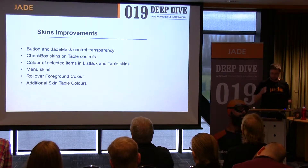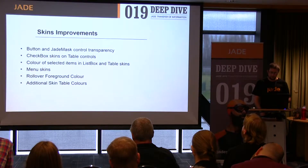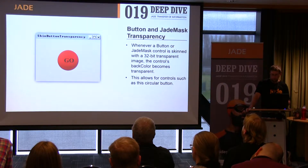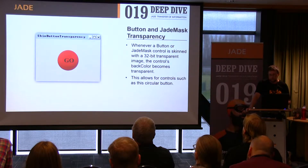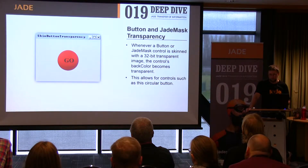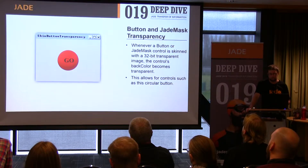We've added a collection of improvements for skins such as button and jade mask control transparency, checkbox skins and table controls, color of selected items in list boxes and table skins, some menu skins, rollover foreground colors, and additional skin table colors. The handling of button and jade mask skins has been upgraded so that when either control is skinned and at least one of the skinned images is 32-bit, meaning the alpha channel is used for transparency, the control will be treated as transparent. This means the control will be painted on its parent without the background being erased, so the parent will show through any transparent areas of the image, allowing for smooth anti-aliased corners.